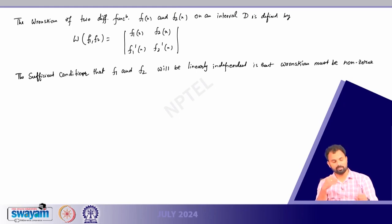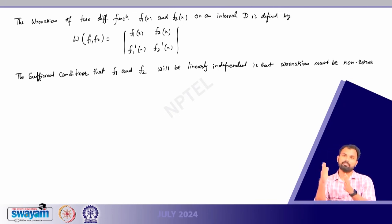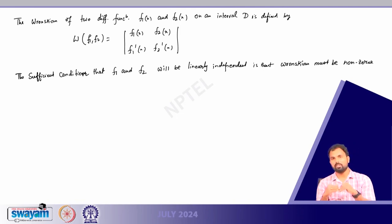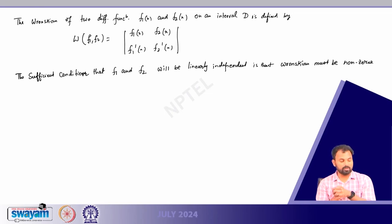In the next class I will generalize this definition for n functions, and we will see that this condition is only sufficient — it is not a necessary condition. We will look at some counter examples and proceed from there. I will stop here today and we will continue this discussion in the next class.